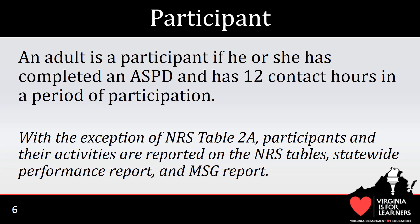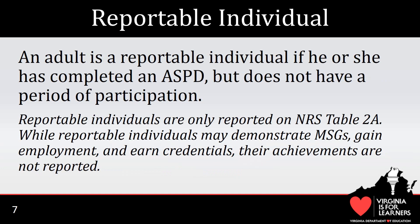Participants and their activities are reported on all NRS Tables except Table 2A. In addition, participants and their activities are reported on both the SPR and the MSG Report. In Virginia, a reportable individual is defined as an individual who has completed the required fields on an ASPD. Once the individual accumulates 12 or more contact hours and has a POP, he or she becomes a participant.